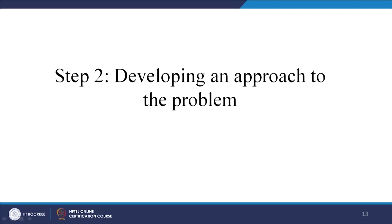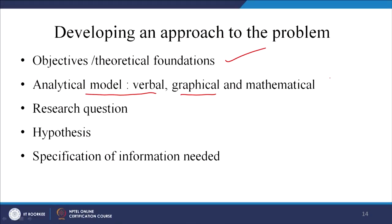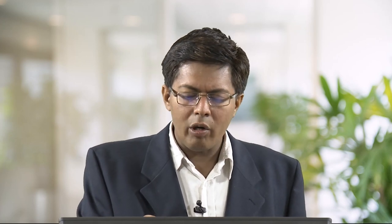The first step was to identify the research problem. The second step is to develop an approach to the problem. You can have theoretical foundations — from several classical theories you can get connected and think. You can have analytical models like verbal models, graphical models, or mathematical models in the form of equations. Develop research questions, develop hypotheses, and specify what kind of information I need. If you are clear about your objective, research question, and the model you are going to build, then your process of doing research will be simpler.